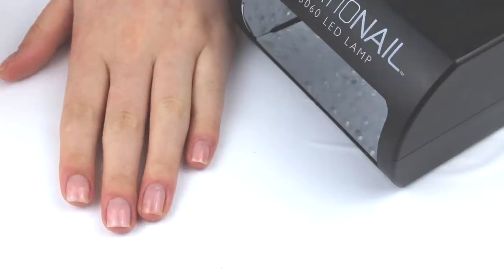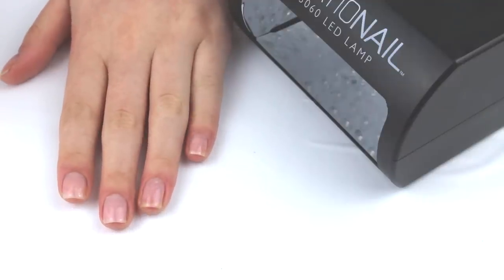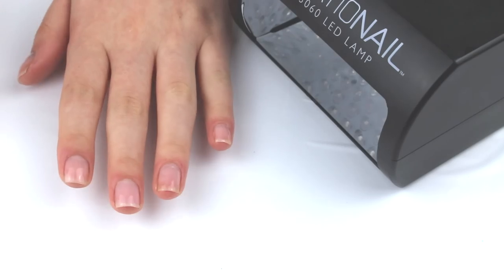Once I've done that, I'm going to cure the pink in the lamp for 60 seconds. I'm starting with my fingers again and thumb separately.